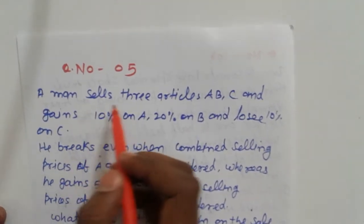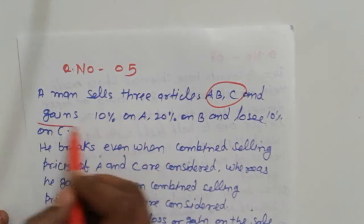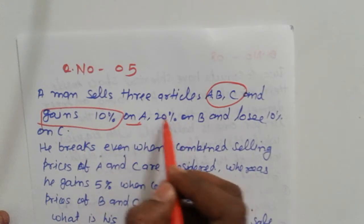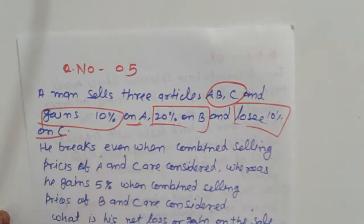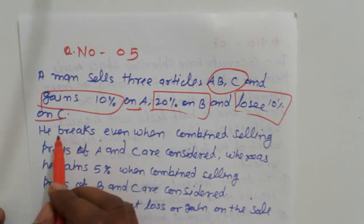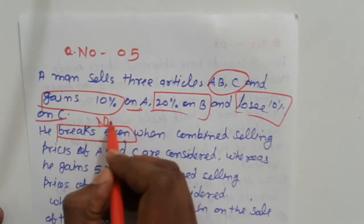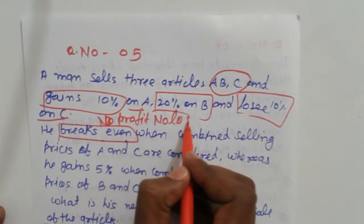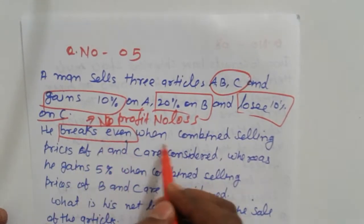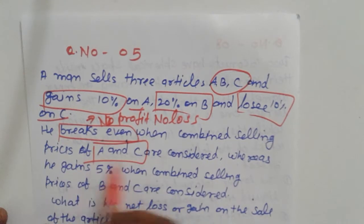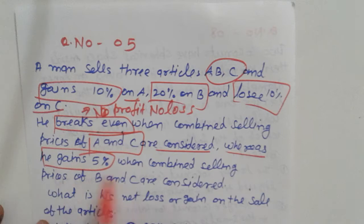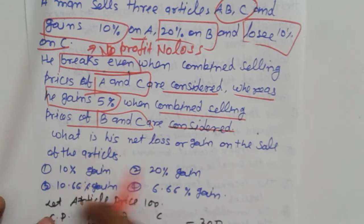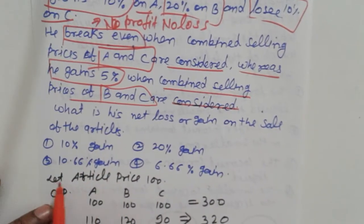Next problem: a man sells 3 articles A, B, C — gain 10 percent on A, 20 percent on B, and lose 10 percent on C. Break even means no profit and no loss. When A and C are combined, it is break even; when B and C are combined, there is a 5 percent gain.